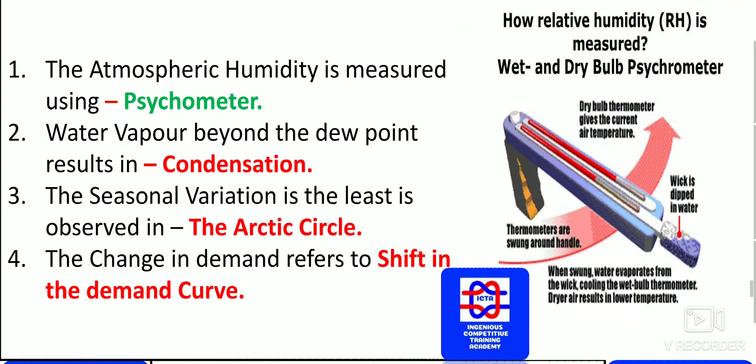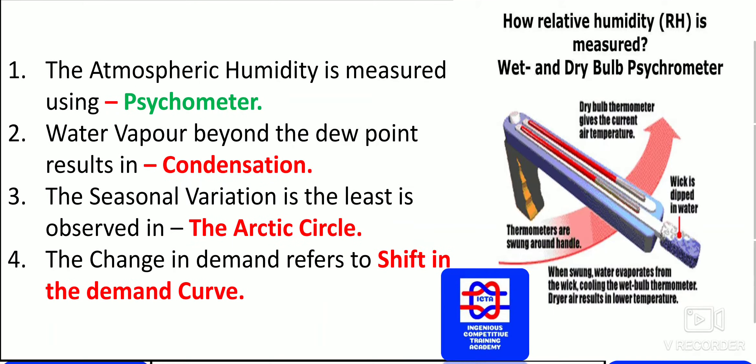Atmospheric humidity is measured using a psychrometer. The dry bulb thermometer in a psychrometer gives the current air temperature. Humidity is also measured by a hygrometer, but the psychrometer option is given for atmospheric humidity measurement.